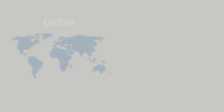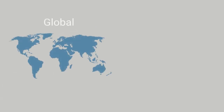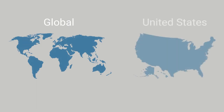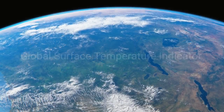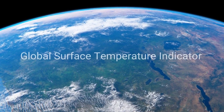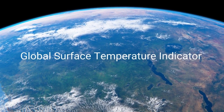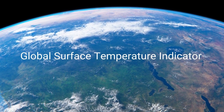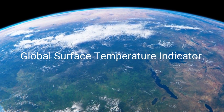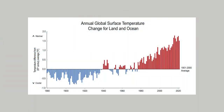We are going to look at two different temperature indicators: global surface temperature and U.S. surface temperature. Let's first take a look at the global surface temperature indicator. This long-term record of global temperature is a key indicator of warming in the climate system. The bars on the graph show the number of degrees by which the average global temperature for each year differs from the average global temperature during the last century, 1901 to 2000.